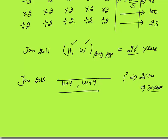Average will become 26 + 4 = 30 years. This is the same concept as with Dhoni's runs. Even if we don't know the individual ages, we know each number is increased by 4, so average will also increase by 4 — average becomes 30 years.